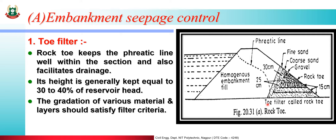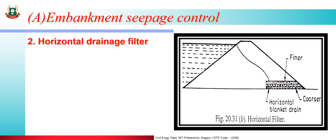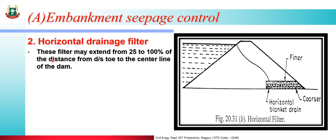In the rock toe filter, observe this image: there is fine sand, then coarse sand, then gravel, then rock toe, and all layers are 15 centimeters thick. Second is the horizontal drainage filter — it has a finer layer, a coarse layer, and a horizontal blanket drain, along with the phreatic line. These filters may extend from 25 to 100 percent of the distance from the downstream toe to the centerline of the dam.